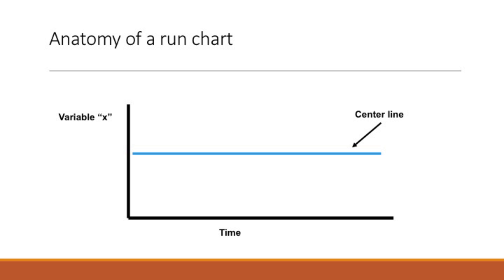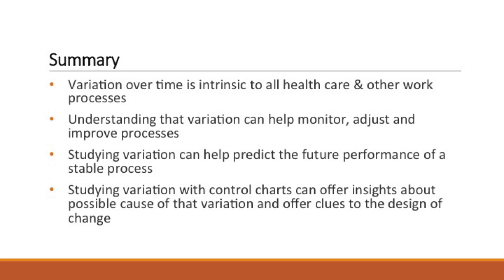We always have a variable x that we look at over time to create a run chart. Using the data, we calculate a center line. A control chart is quite similar — it starts just like a run chart with a variable and data over time with a center measurement, and then adds an upper control limit and a lower control limit that are created from the data.